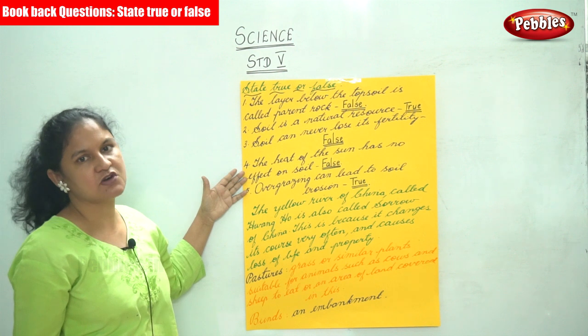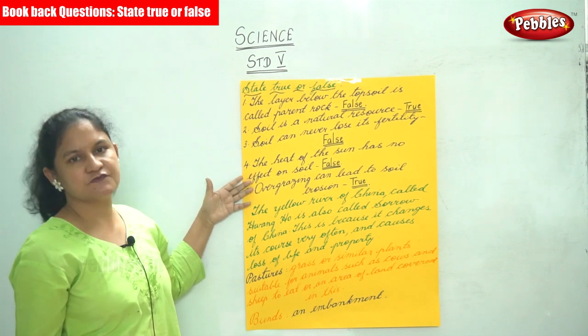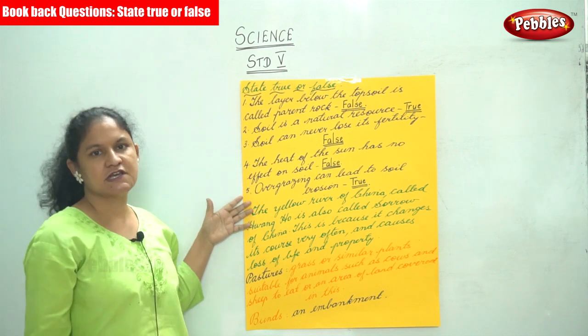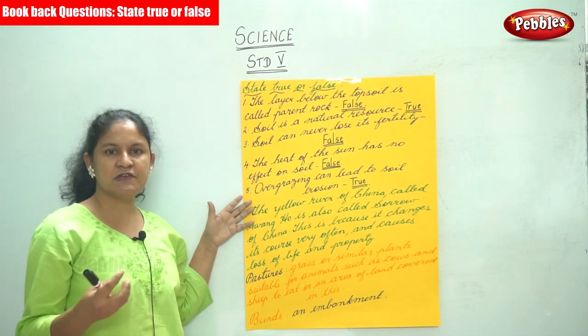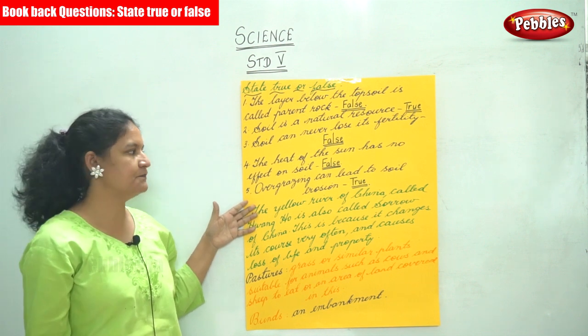The next statement is: the heat of the sun has no effect on soil. Again it is false. The extreme heat of the sun dries up the soil.